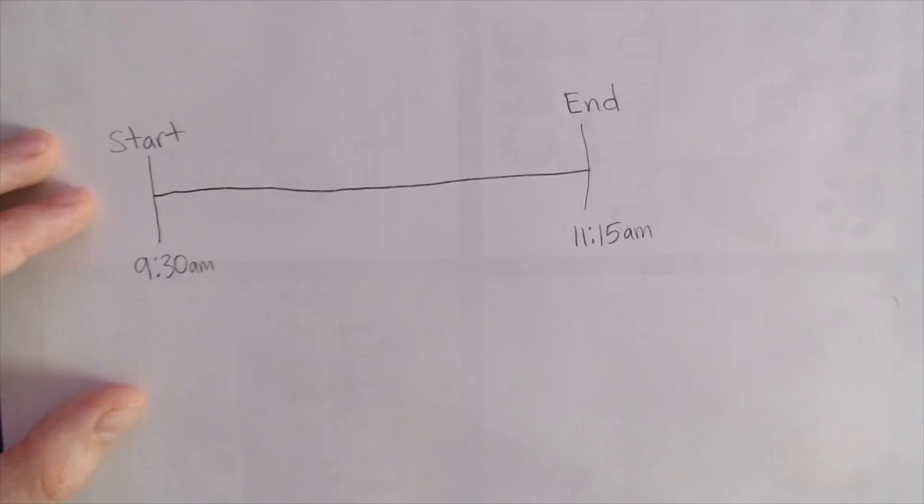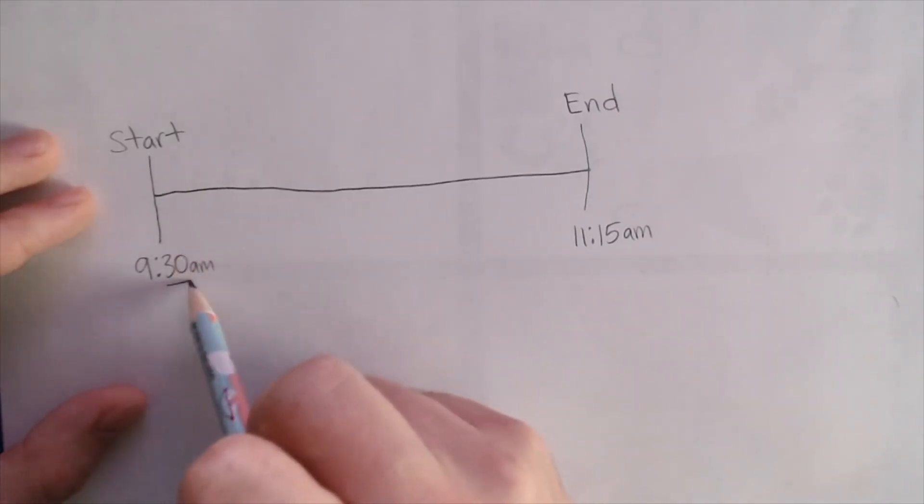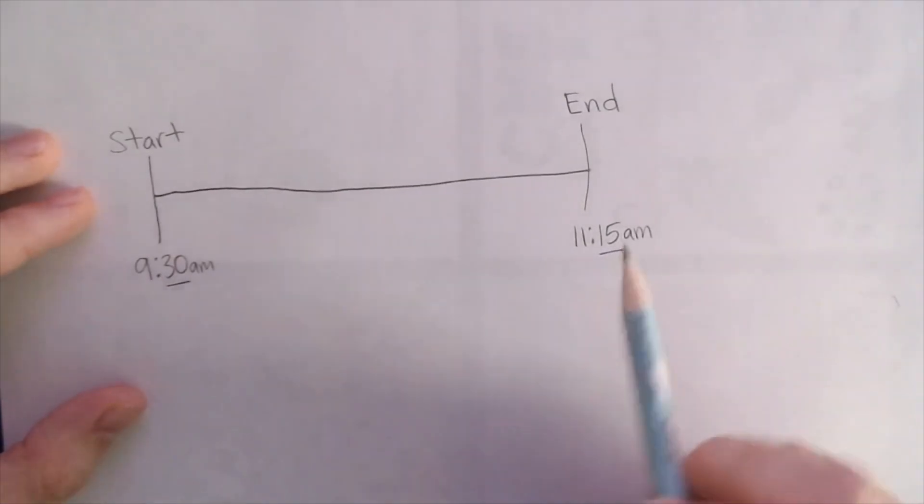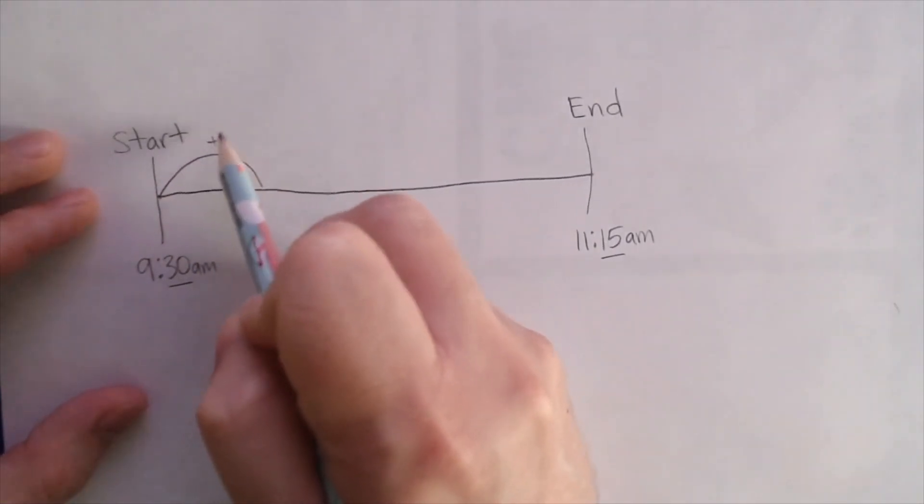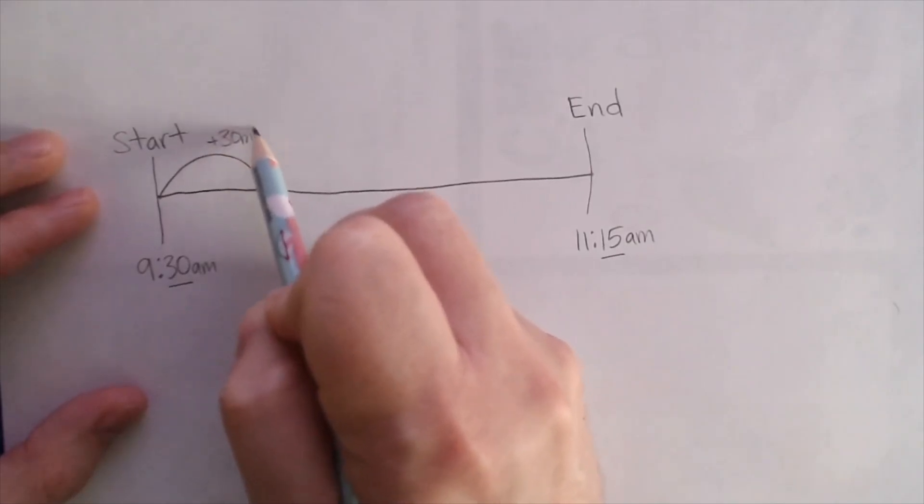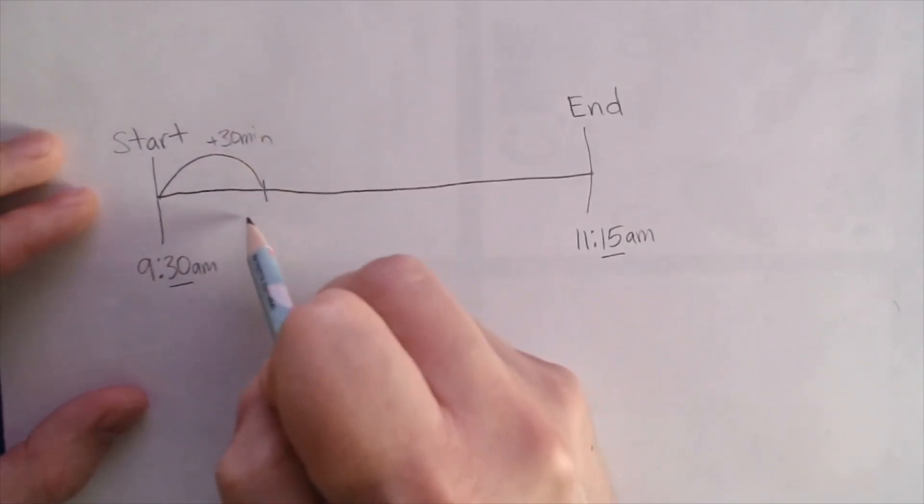Now, what I'm going to do next is I'm going to start at my beginning, my start time, and add segments of time, like hours and minutes, until I reach the end time. And I want to look at the minutes first. We started at 9:30am and ended at 11:15am. So, I want to add my minutes first until they match.